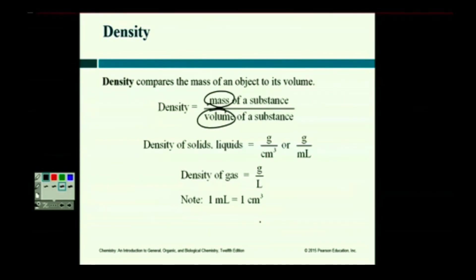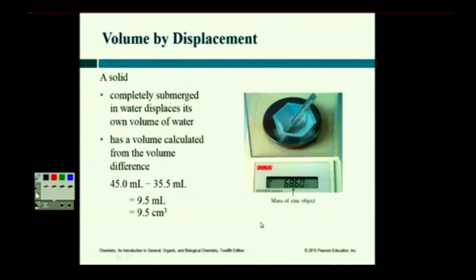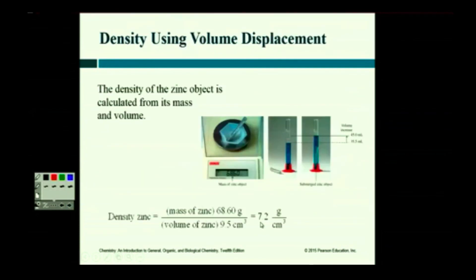We don't like calculating, do we? Displacement is way easier than length, width, height, or pi r squared H, or something like that, right? So two units, grams per centimeter cubed, normally for solids, or grams per milliliter for liquids. Here's an example. They had this piece of metal. They submerged it. The volume went from 35.5 milliliters to 45, so the volume is 9.5 milliliters. The mass, 68.60 grams, measured on a balance. You take the two and you divide, you're down to 7.2 grams per centimeter cubed. Okay? Make sense? You just divide the two units. Grams over centimeters cubed, or grams over milliliters.